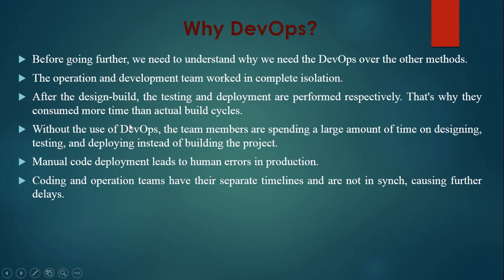Our next question is: why DevOps? Before going further, we need to understand why we need DevOps over other methods, like the agile process or other tools. Without DevOps, the operation and development teams work in complete isolation. After the design and build, testing and deployment are performed separately, which consumes more time than the actual build cycles. Team members spend a large amount of time on designing, testing, and deploying instead of building the project. Manual code deployment leads to human errors in production. The operation and coding teams have separate timelines that are not in synchronization, causing further delays.